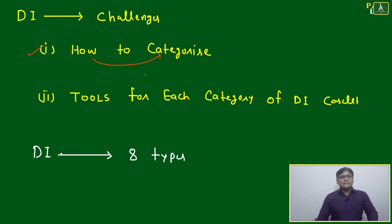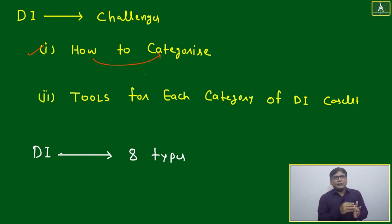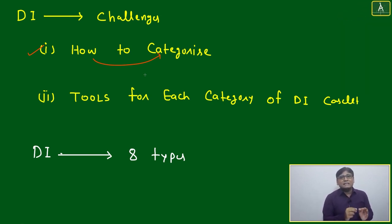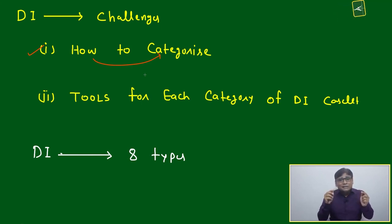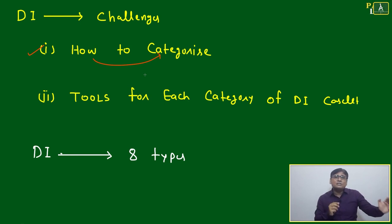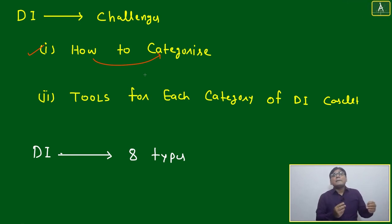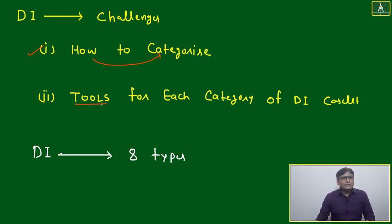The first major challenge is how to categorize the DI caselet — meaning, after just seeing a DI caselet and reading one or two lines, can we categorize it based on a particular mathematical concept? If we are able to categorize it, our brain will immediately think about which formula, concept, or trick to apply based on that mathematical concept.